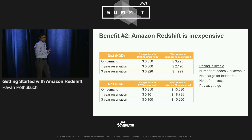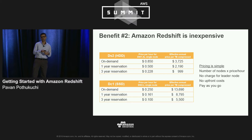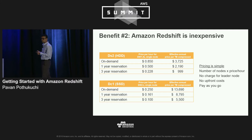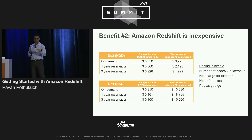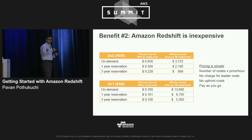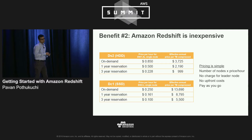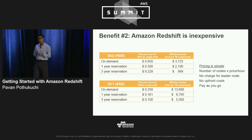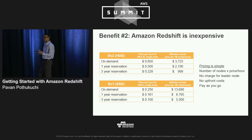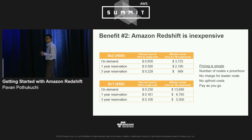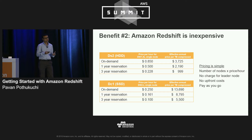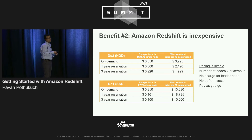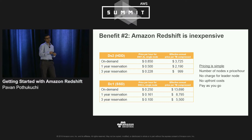Redshift starts at $1,000 per terabyte per year — that is for a three-year reservation on the HDD platform. Pricing is straightforward: it's the number of nodes times the price per hour for that node type. There are no extra charges for the leader node. Charges are for compressed gigabytes or terabytes.